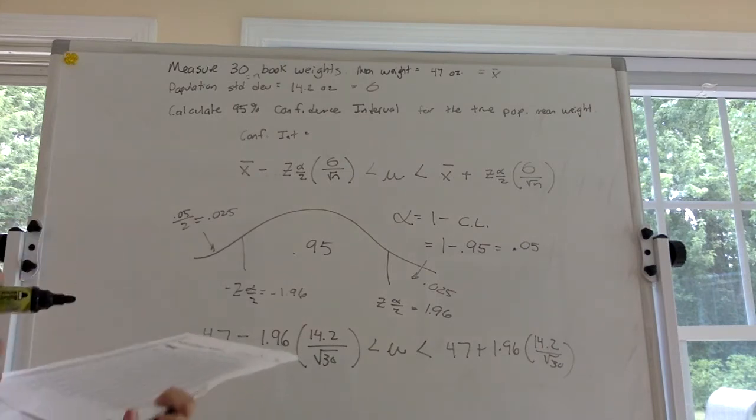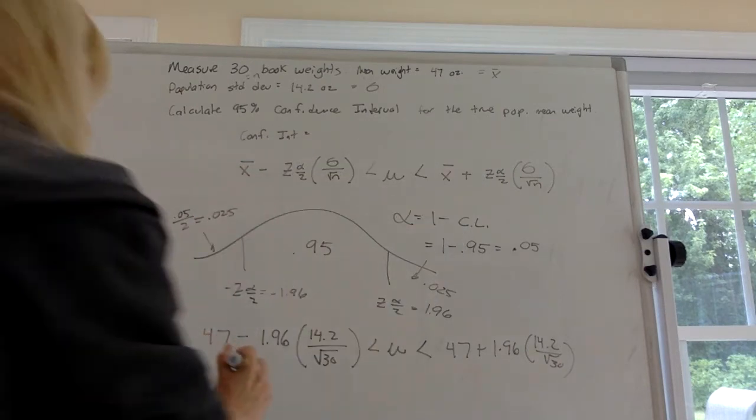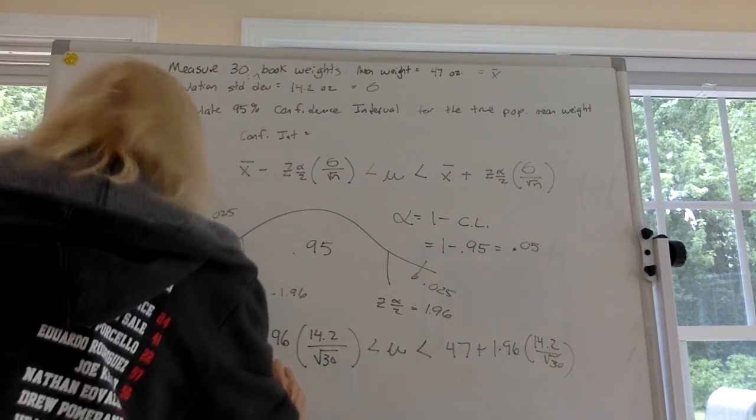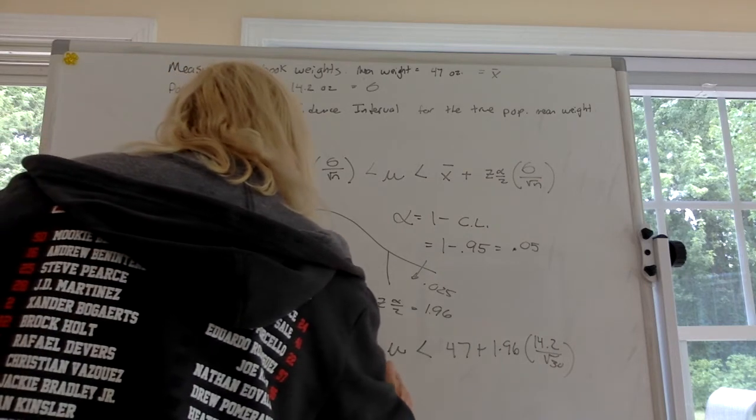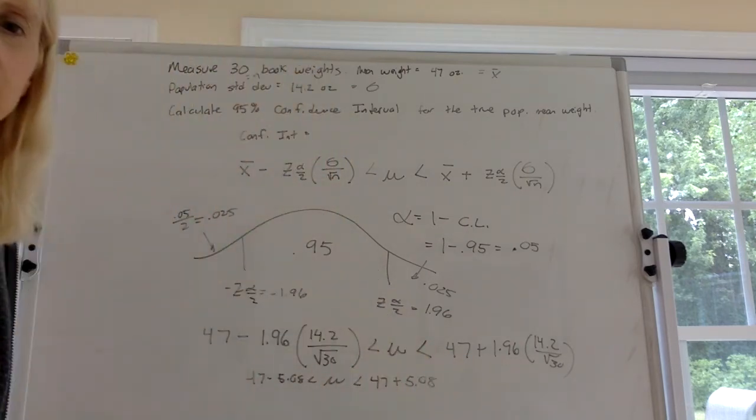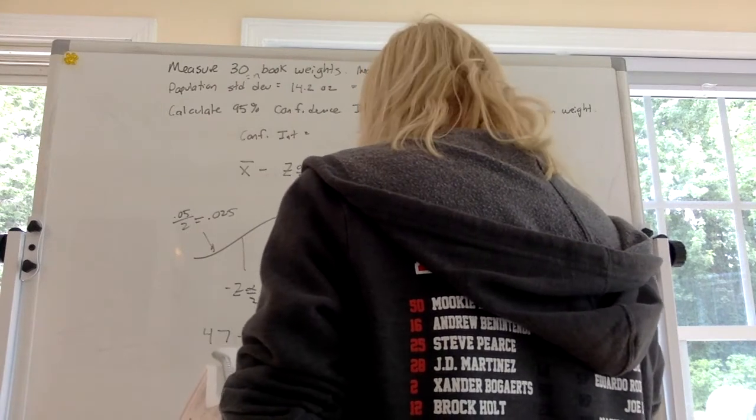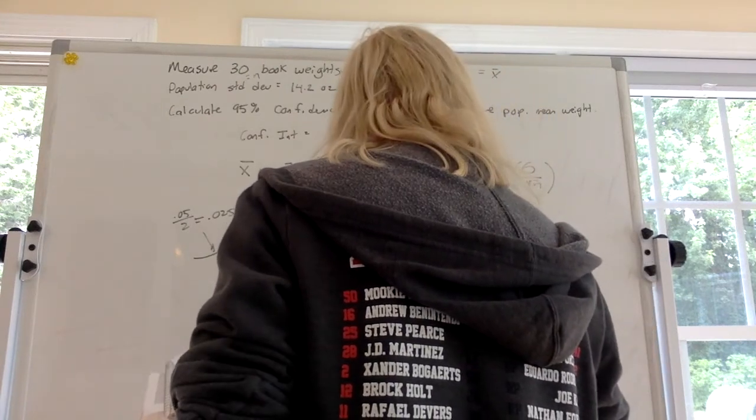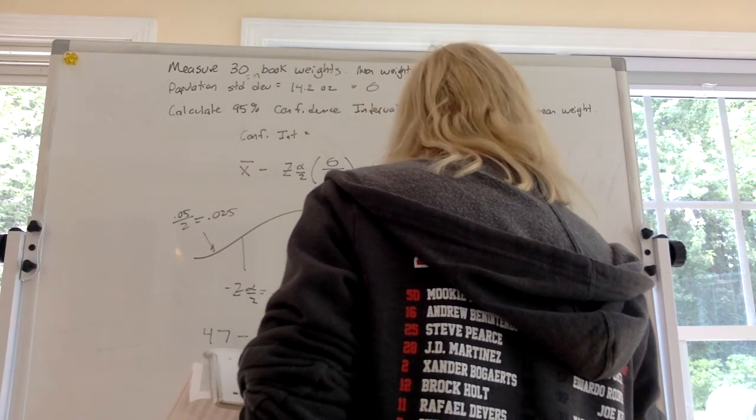And I think I got, let's see. What did you do? Okay. So that gives you a range of a confidence interval. That's what we're figuring out. It's 41.9 to 52.08.